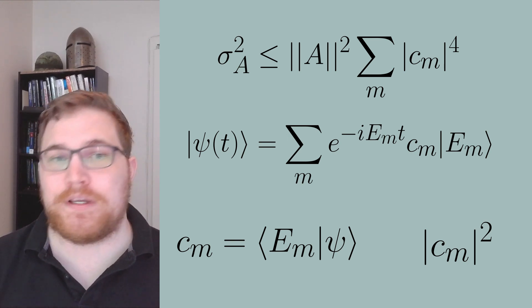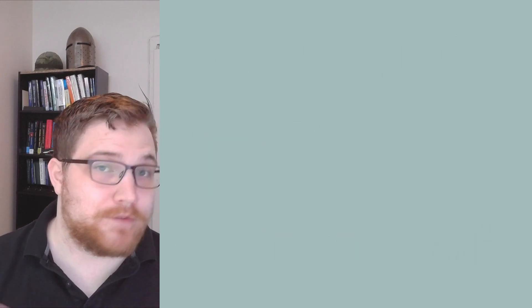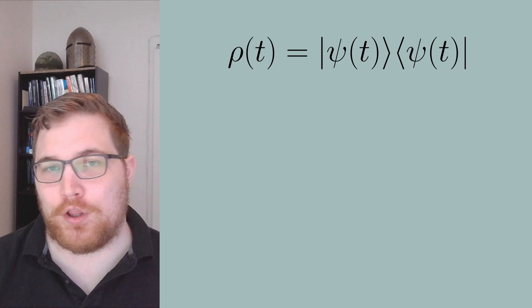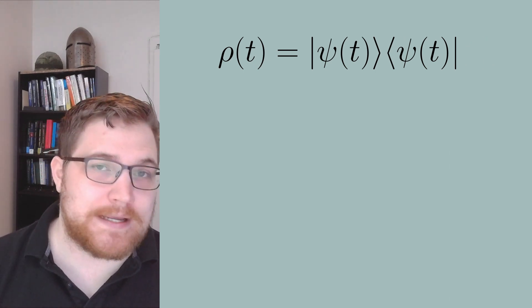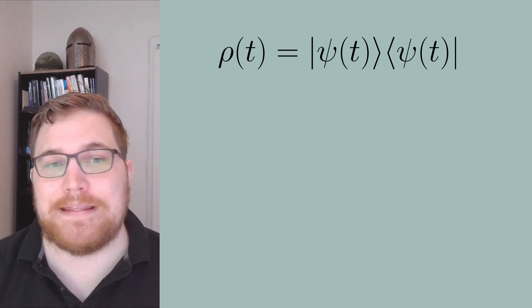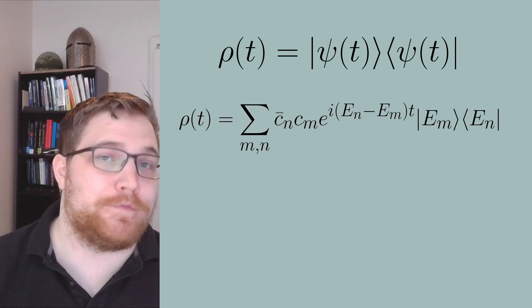This expression or this upper bound can also be understood in terms of purity. Let's define the density matrix rho as the following expression. So the outer product of our pure state, psi. Expanding this in the energy eigenbasis, we get the following expression.